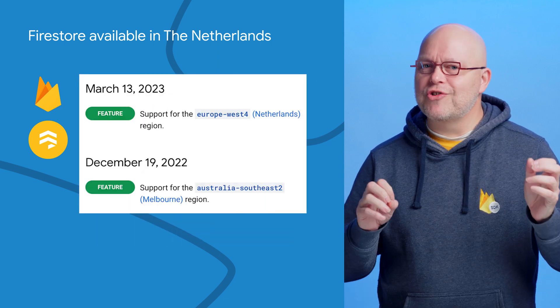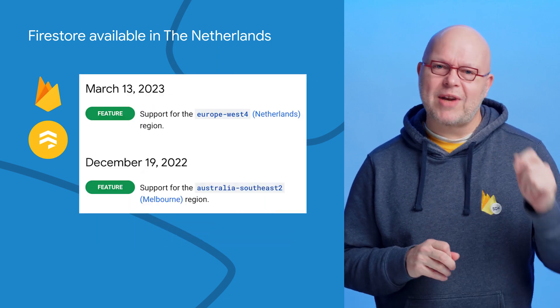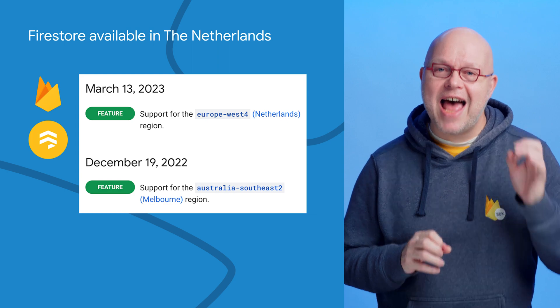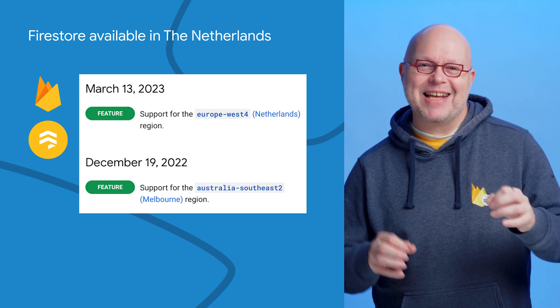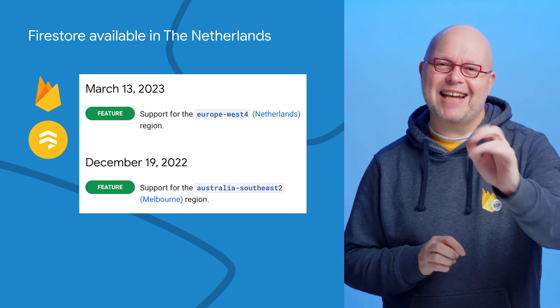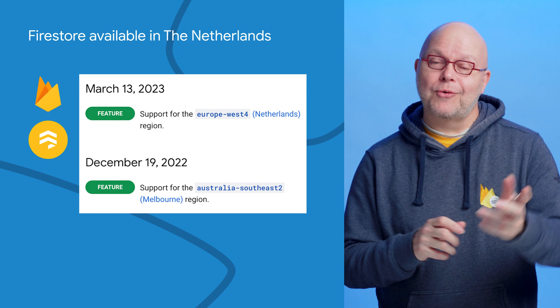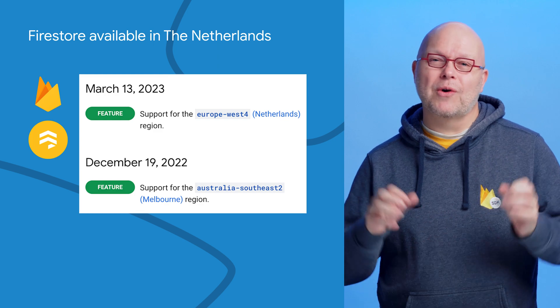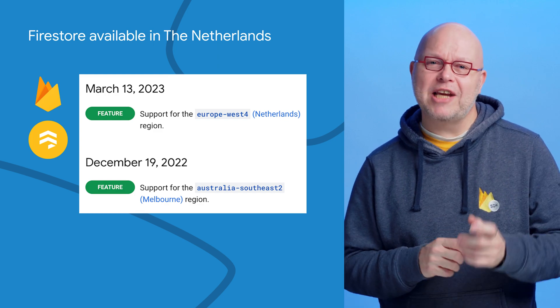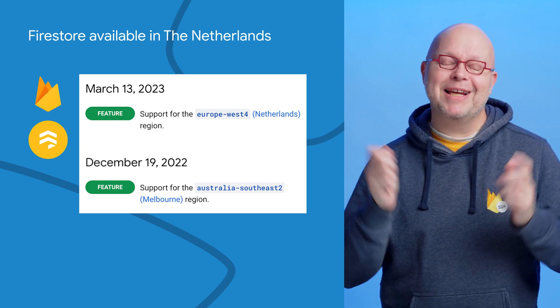The most recent additions are Melbourne, known as Australia Southeast 2, and Amsterdam, known as Europe West 4, which was just added this month. Keep checking the release notes for updates, or see the full list of locations in our documentation linked below.